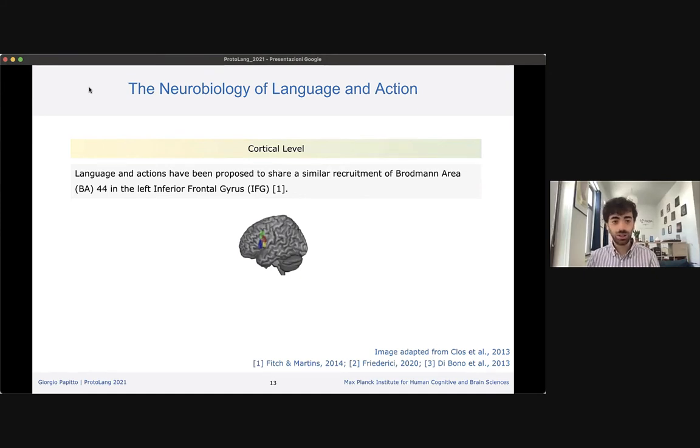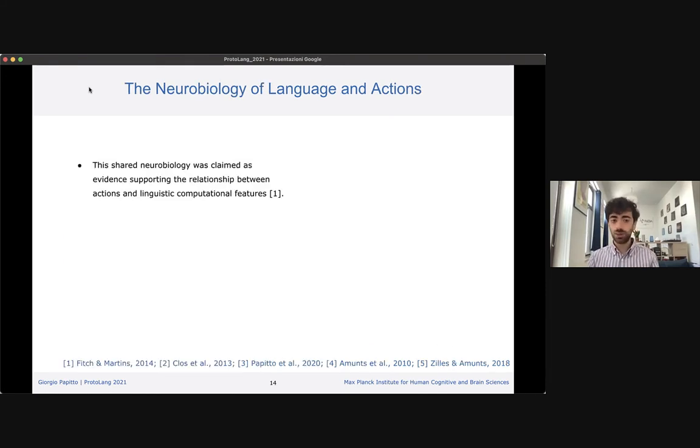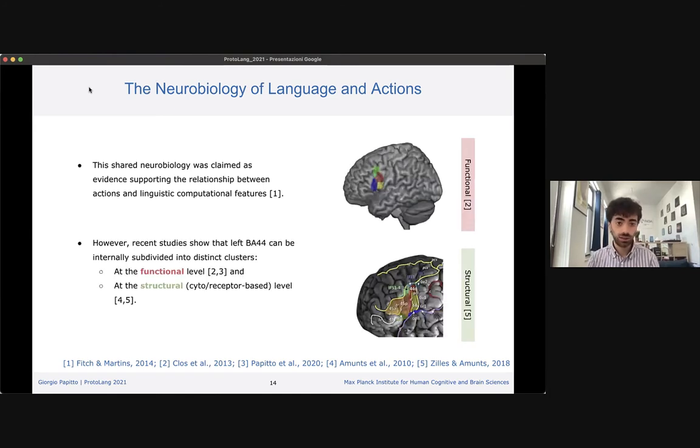Now we can shift to the relationship between language and action at the cortical level. Language and action have been proposed to share similar recruitment of Broca's area in the left inferior frontal gyrus. In language, this area has been linked to syntactic processing. In action, this area seems to encode biological and goal-oriented actions. This brought many researchers to suggest that language and action must be sharing some common computational feature. However, we also know that BA44 is not a holistic undividable unit. Within this area, many clusters and sub-areas have been identified at the functional and structural level.